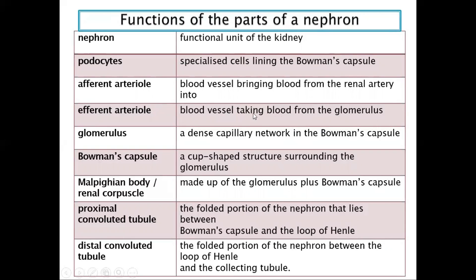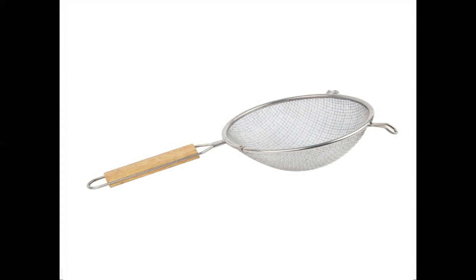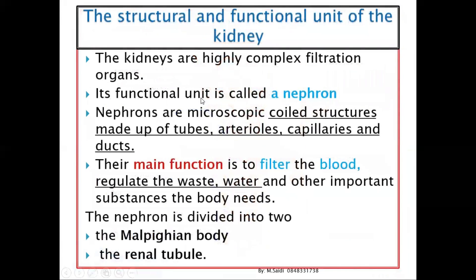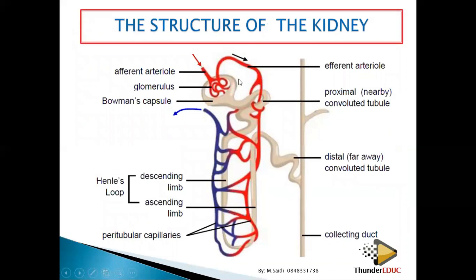The efferent arteriole takes blood away from the glomerulus after filtration has taken place. The glomerulus is a dense capillary network inside the Bowman's capsule — when the arteriole comes in, it branches into small branches like a sieve. The Bowman's capsule is a cup-shaped structure surrounding the glomerulus, allowing substances to be held.